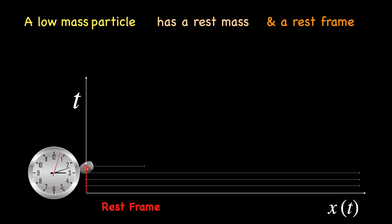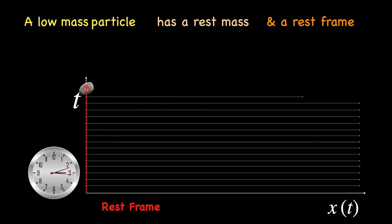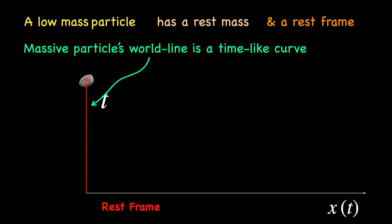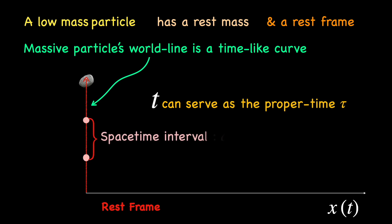it must keep pace with its rest frame time or proper time. So, it moves along the time axis as its rest frame clock ticks. Thus, its spacetime trajectory or world line is a timelike curve by nature and we can define its proper time as the spacetime interval measured along its world line.